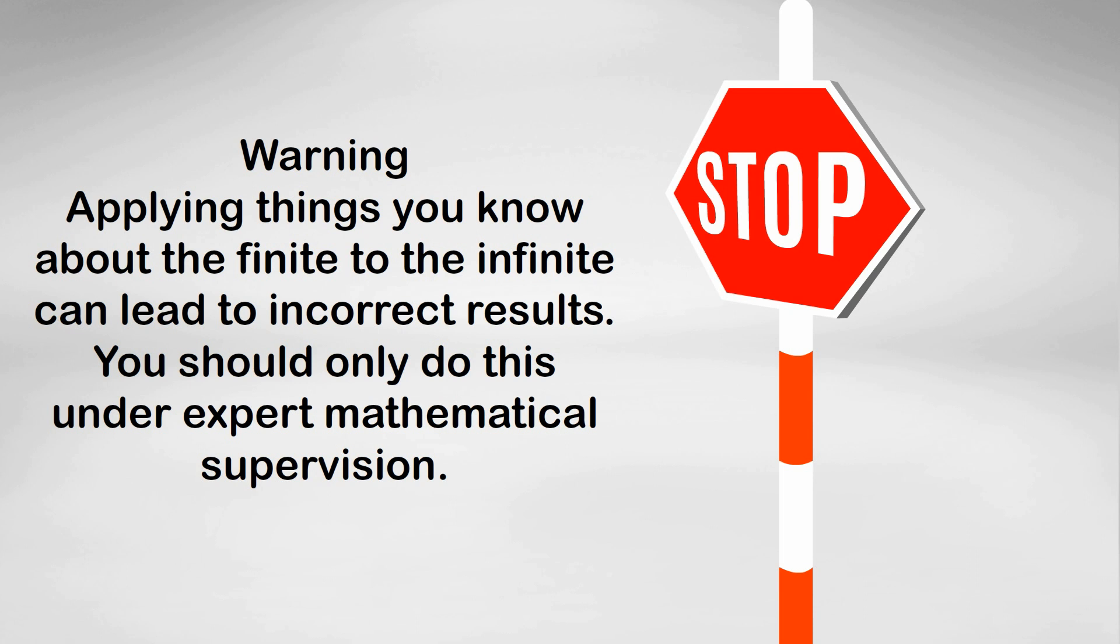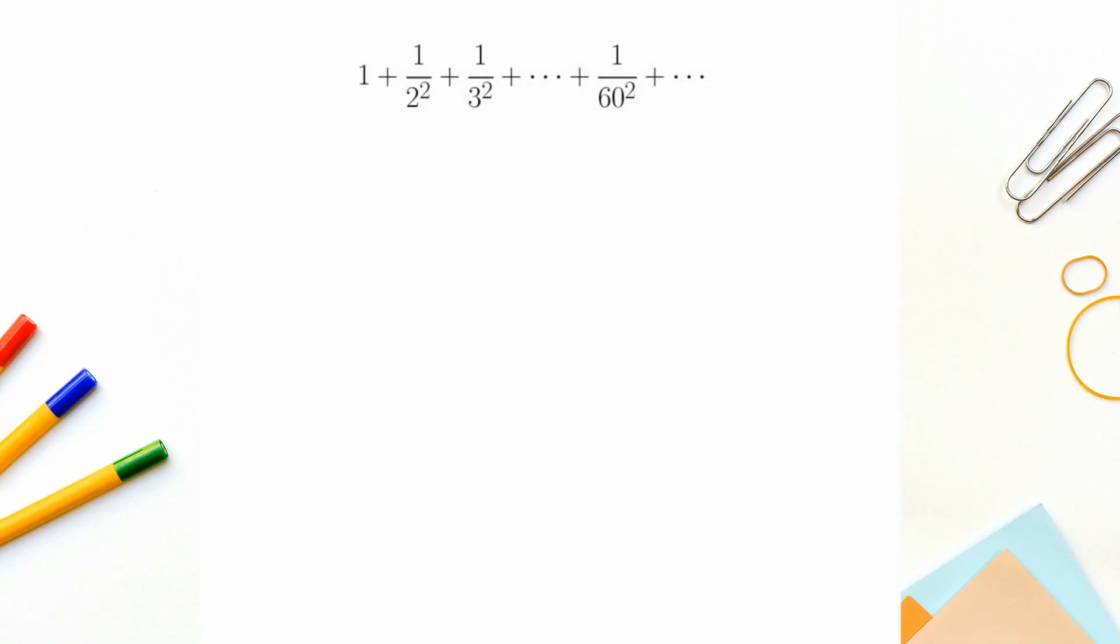So let's start off with this infinite series: 1 plus 1 on 2² plus 1 on 3² plus dot dot. You can see the 1 on 60² and it just goes on forever. Now what I want to do is I'm going to show you a different way to express this series. In fact I'm going to show you two ways. One's going to involve pi and one's going to involve the primes.